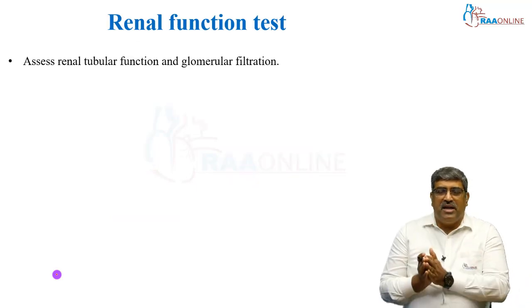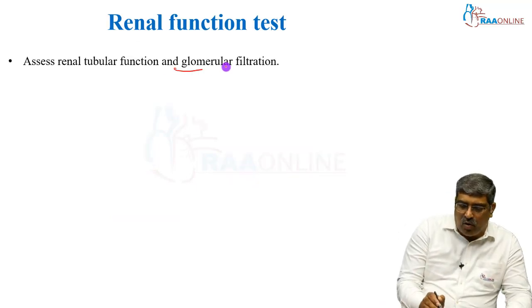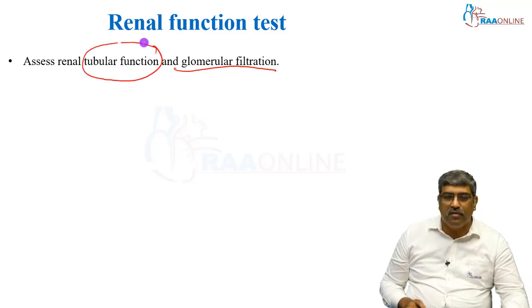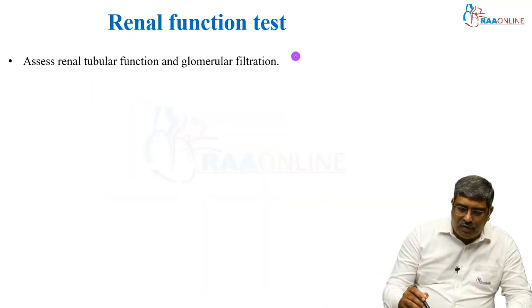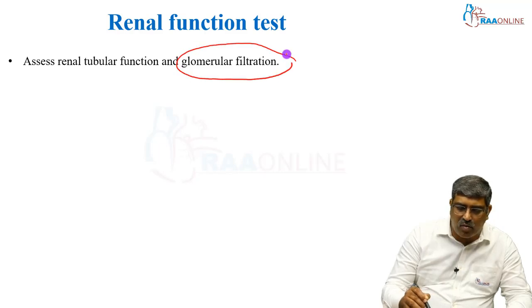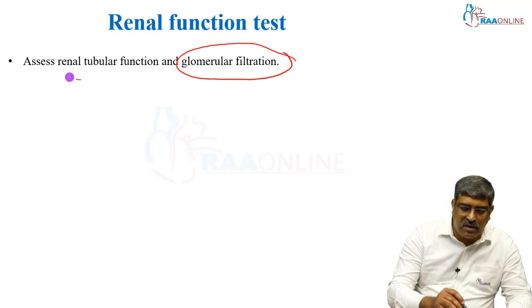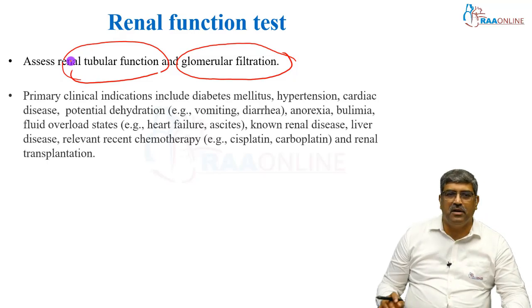This renal function test assesses glomerular filtration as well as tubular function. The primary aim for doing a renal function test is to assess the glomerular filtration as well as the tubular function.